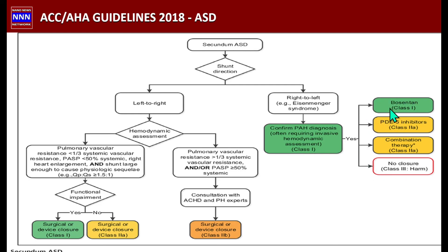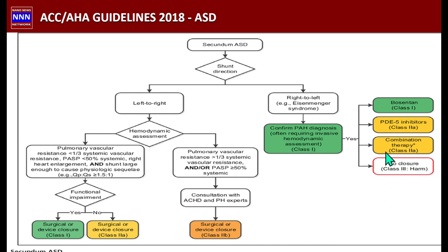The medications available for Eisenmenger syndrome include endothelin receptor antagonists, PDE-5 inhibitors, and prostacyclins — or combinations. Closure of the atrial septal defect is NOT indicated in Eisenmenger syndrome. This is an important board exam question: a patient with pulmonary hypertension and Eisenmenger physiology — the wrong answer is surgical or device closure. The correct answer is medical management with pulmonary vasodilators.